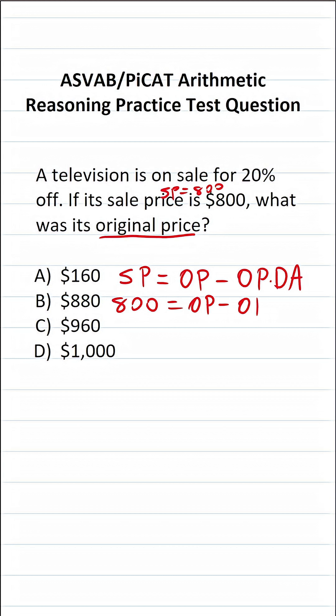We don't know what our original price is, but we know our discount was in the amount of 20%. I'm going to express that as a decimal as 0.2, so this becomes original price times 0.2.